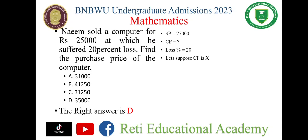Let's suppose the selling price is X. And the equation is: 20% of X plus 25,000 is equal to X.